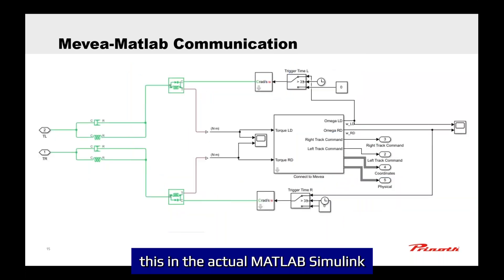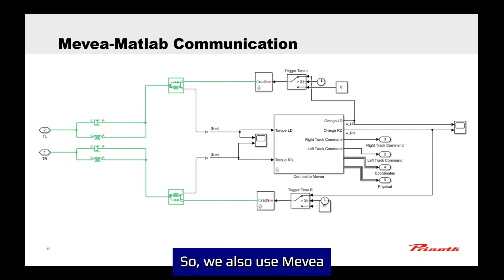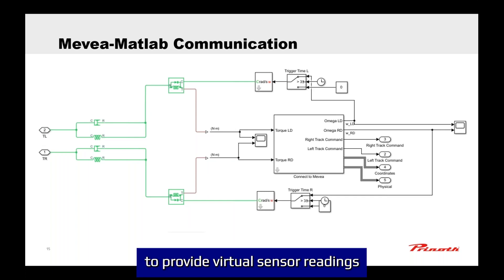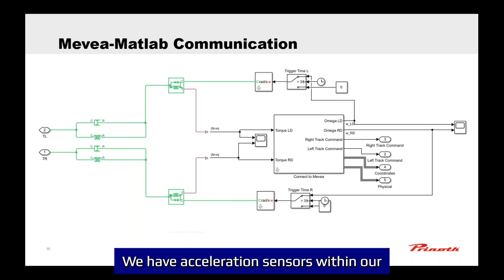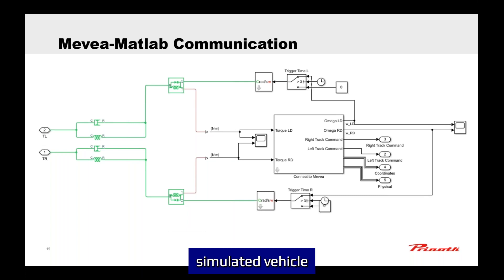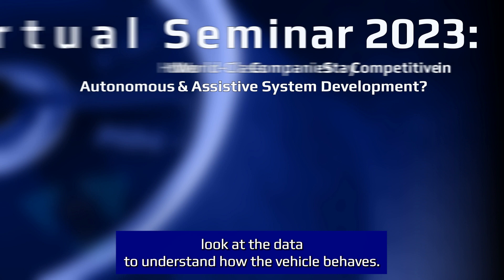We can see this in the actual MATLAB Simulink block. We also use Mebea to provide virtual sensor readings — you can see coordinates and physical signals. We have 15 acceleration sensors on our simulated vehicle to be able to look at the data and understand how the vehicle behaves.